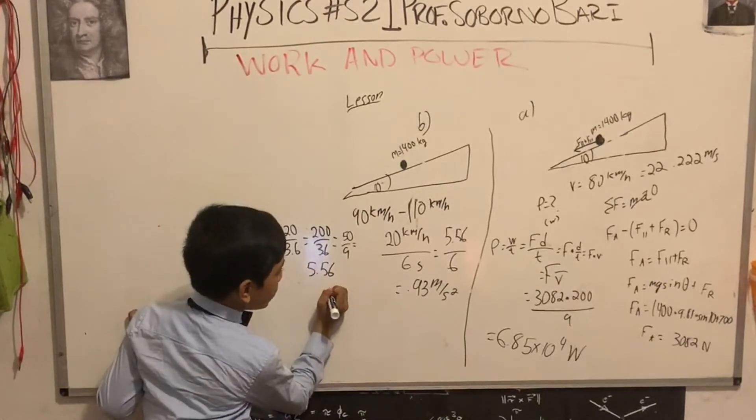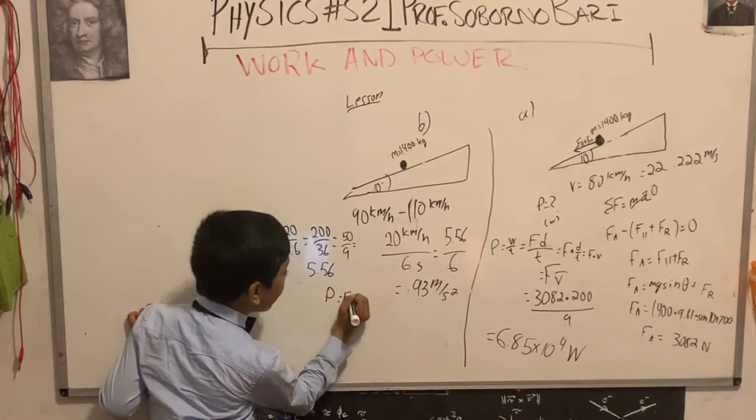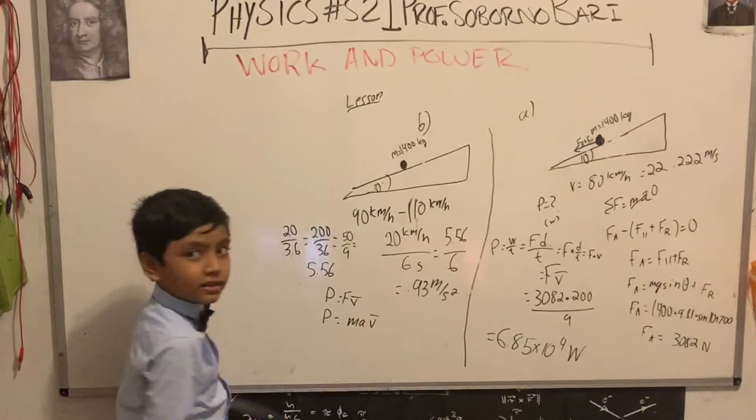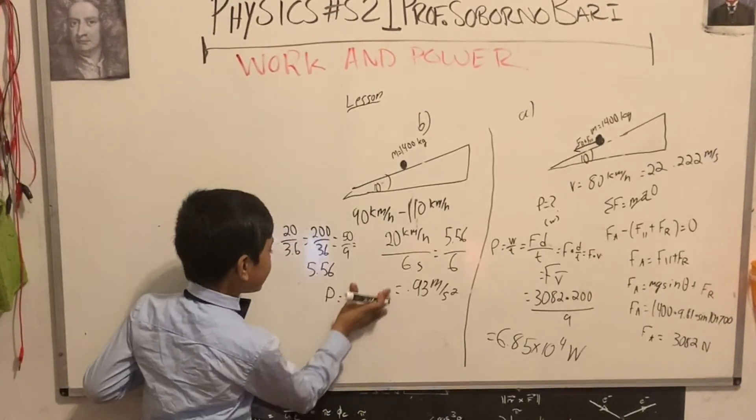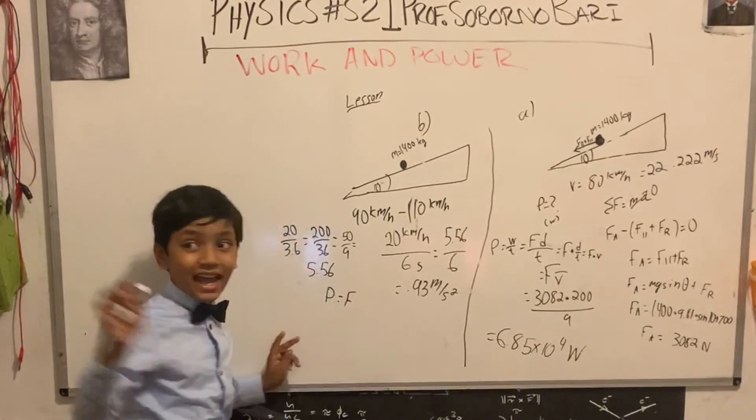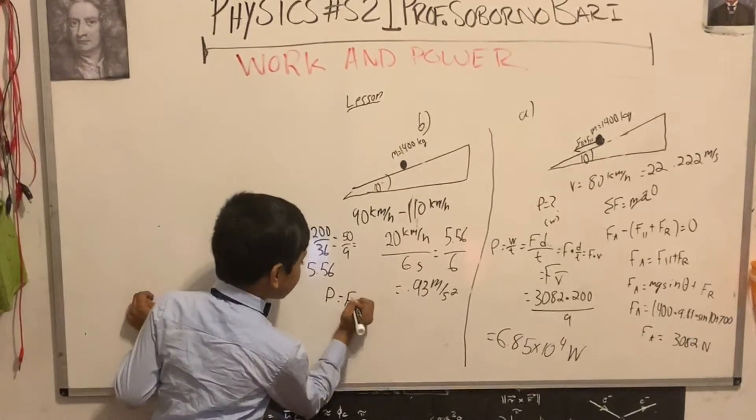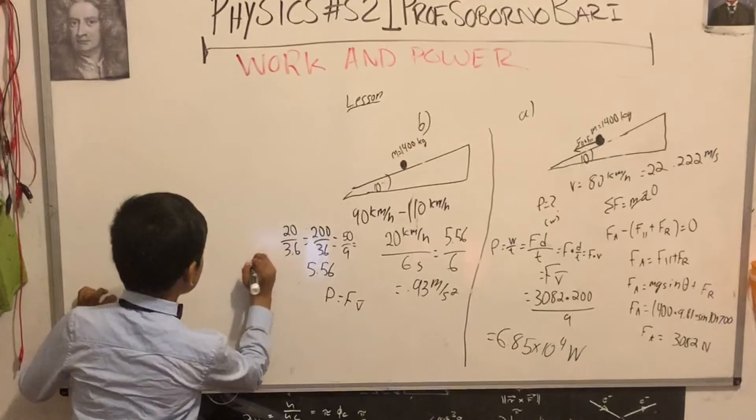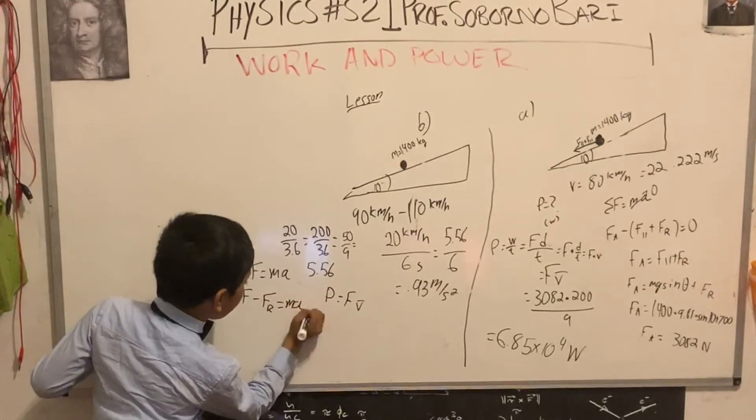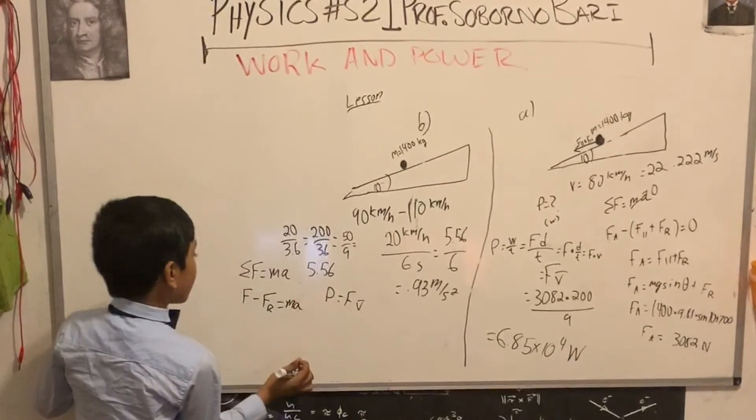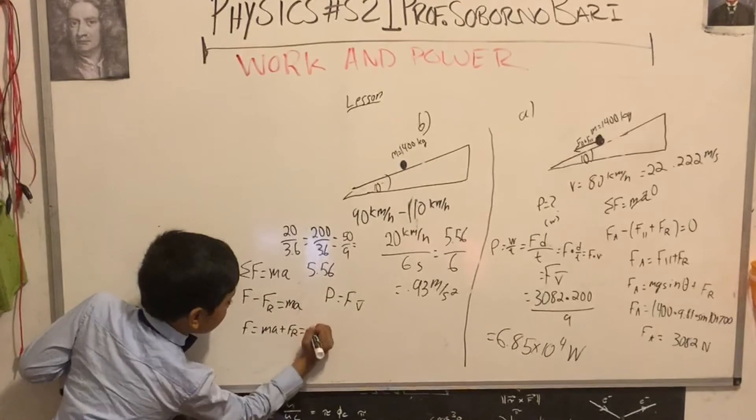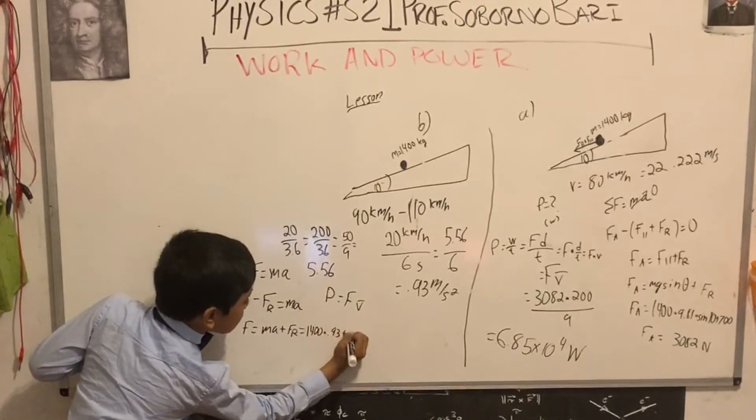We know that P is F times v, but we don't know F in this case. You have to write F equal to MA. This is actually sigma F. Sigma F. F minus F_R. F is MA plus F_R. So M is 1400, A is 0.93, plus 700.